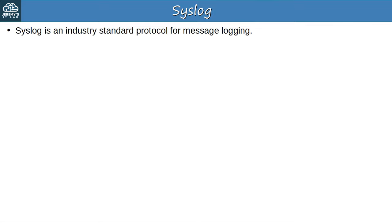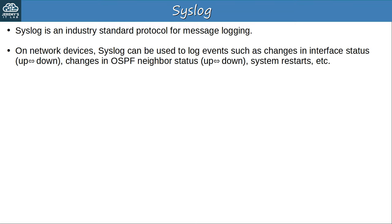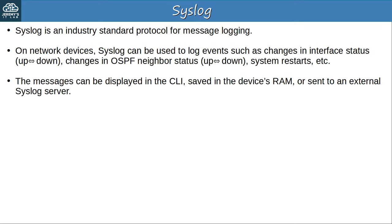Here's a quick overview of syslog. Syslog is an industry standard protocol for message logging. On network devices, syslog can be used to log events such as changes in interface status, changes in OSPF neighbor status or neighbor status in other routing protocols like EIGRP and BGP, also system restarts, etc. Tons of different events can be logged. The messages can be displayed in the CLI as you configure the device, saved in the device's RAM, or sent to an external syslog server.